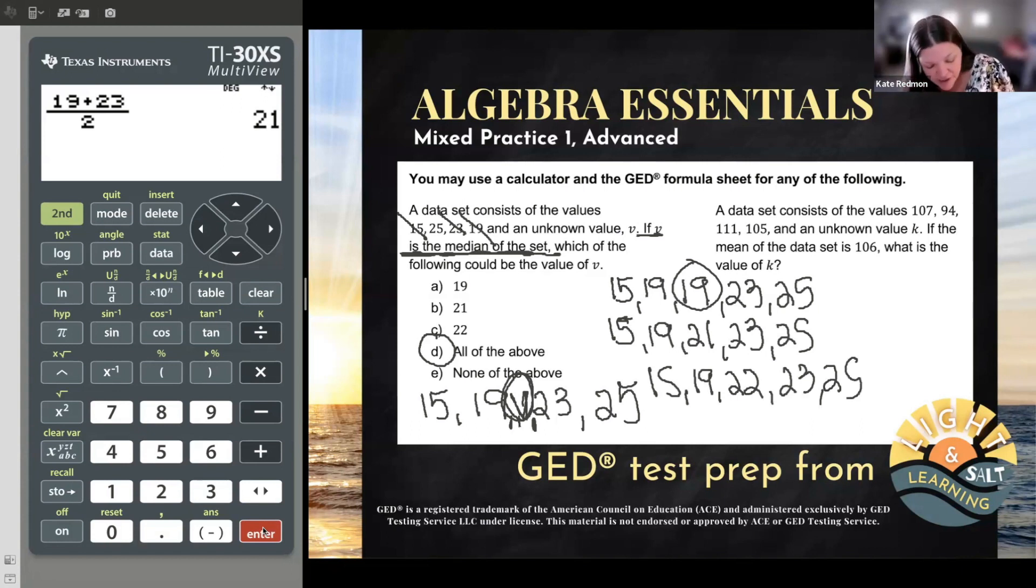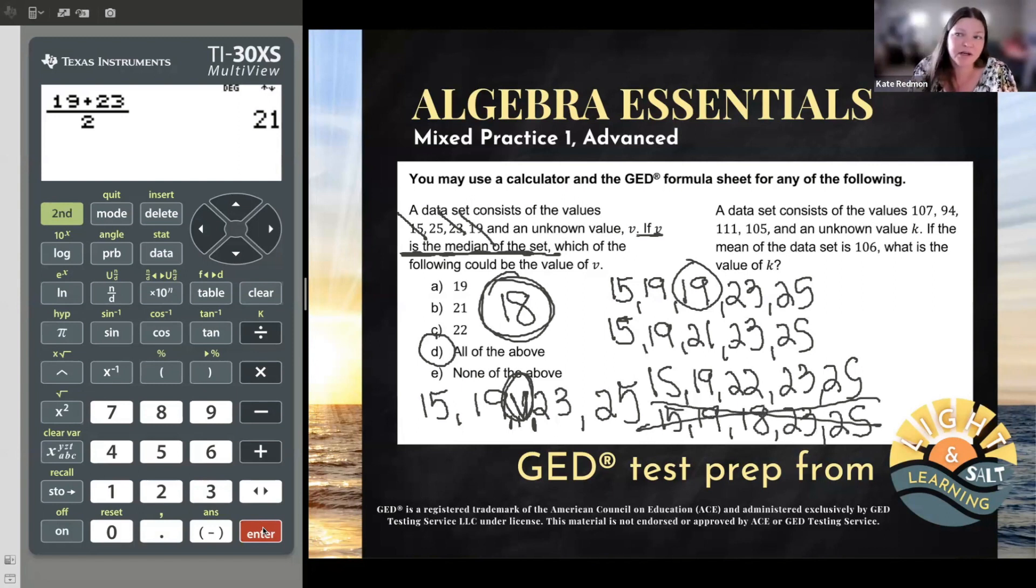But what if, for example, it had 18 as a selection? Now 18 would not have worked because it doesn't make any sense to put 18 in the middle of the list. Now my numbers are not ordered. 18 could not have been the median of the set, but 19, 21, 22, they all could be. So nice, tricky.